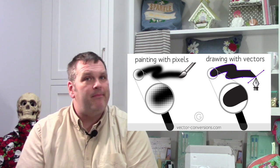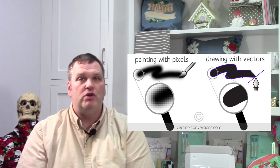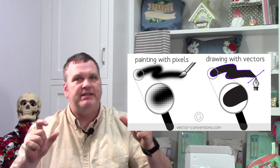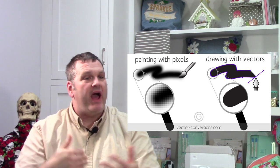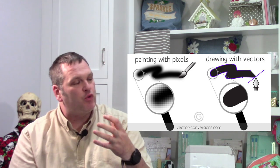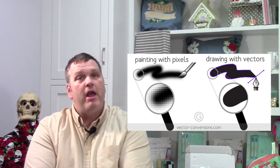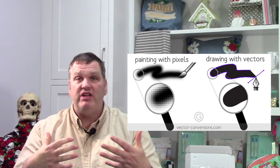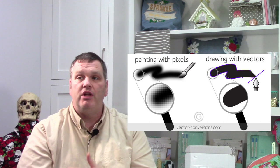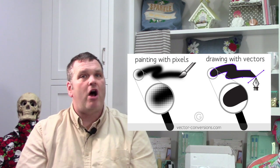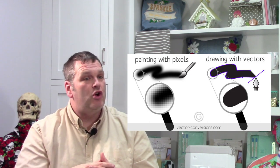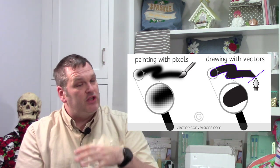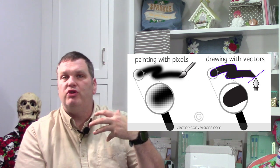A vector image is all done by math — it's the relationship of point A to point B at a certain ratio. So as you zoom in, it maintains a really crisp line. Your SVG files are probably the most prominent vector file format. SVG files are what you need to run a cutting machine or an embroidery machine, because it's mathematically calculated, so you can translate it across different machines.